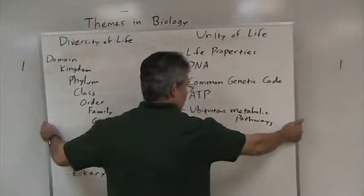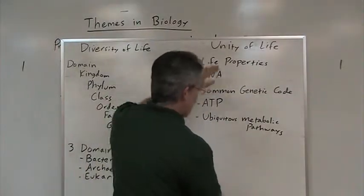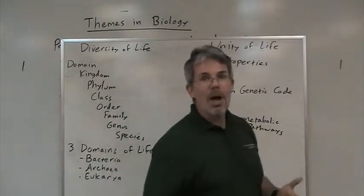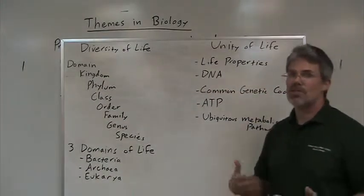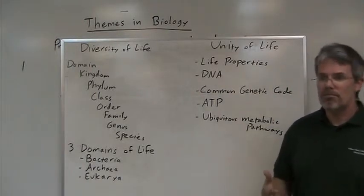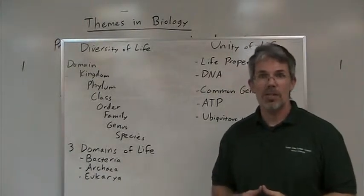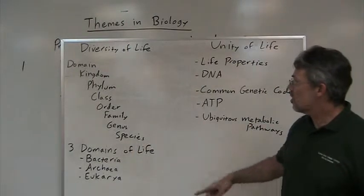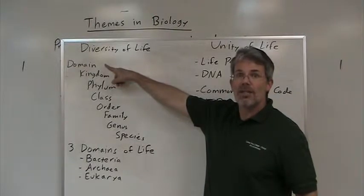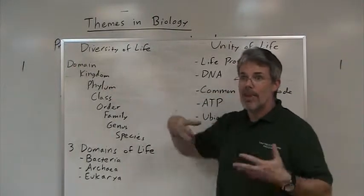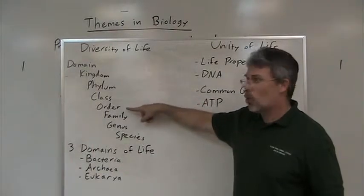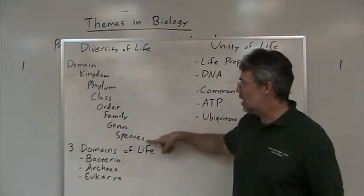Other major themes in biology include the diversity of life and the unity of life. If I were to ask how many species exist, the answer depends on when you've asked the question. To date, just under 2 million species are known, and they're classified according to these various levels. The highest taxonomic level is domain, with major groups subdivided into kingdoms, then phyla, class, order, family, genus, and species — which is a specific kind.